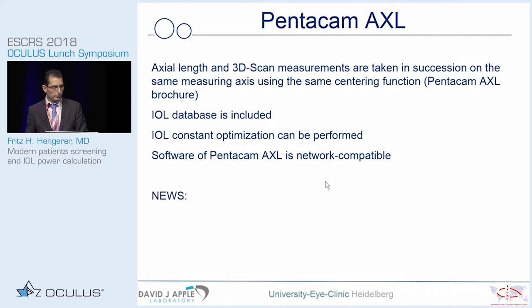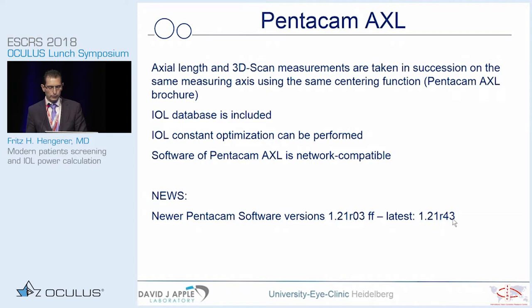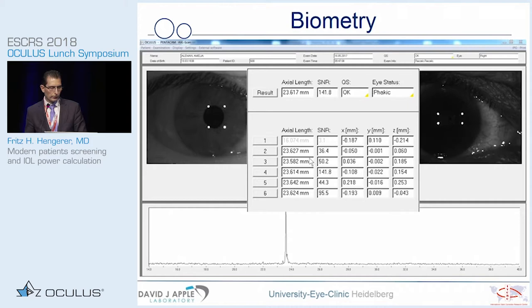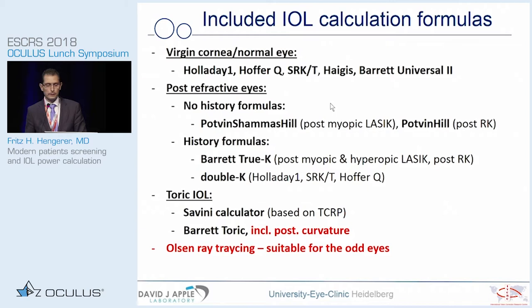You can perform constant optimization for up to 25 surgeons at your site with the current software. It is network compatible and the latest software version is 1.21R43, available on a free-of-charge basis. It is faster and allows measurement of more dense cataracts. An intelligent mathematical algorithm allows the machine to select the right values for axial length — it performs six single measurements and the most reliable one is chosen.